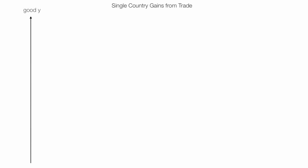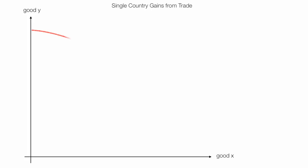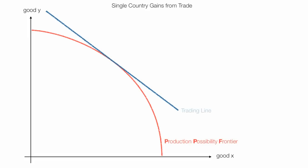To simplify things, I'm going to look at a single country with only two goods: good Y and good X. This red line represents a country's production possibilities frontier. I'm going to draw in a trading line, which is the ratio of the price of good X to the price of good Y. I'm going to draw in some indifference curves, called community indifference curves or country indifference curves.